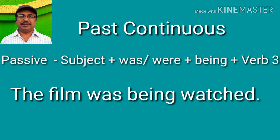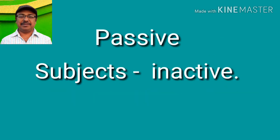'The film was being watched' — by us. It is a passive form of past continuous tense: subject plus 'was' or 'were' plus 'being' plus the past participle form of the verb. We use passive sentences when we want to emphasize on the verb. In passive sentences, subjects don't do anything — rather they experience the result of the action. The real subjects are mentioned at the end of the sentence or omitted, because we know who the subjects are, or the subjects are not so important.